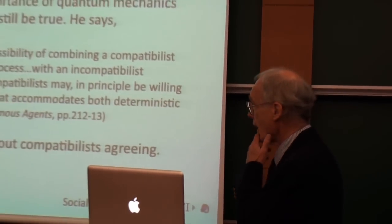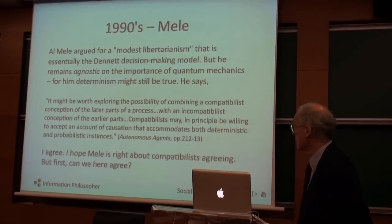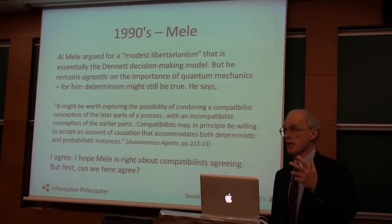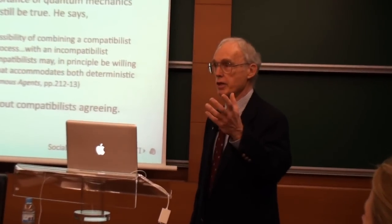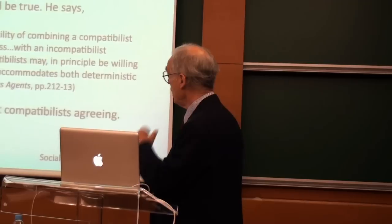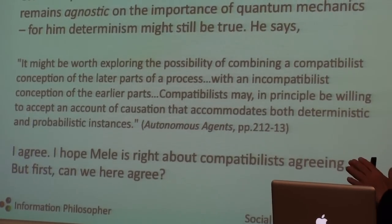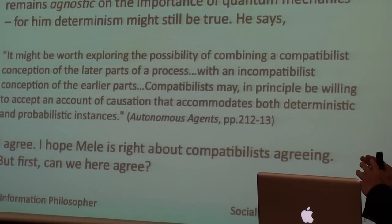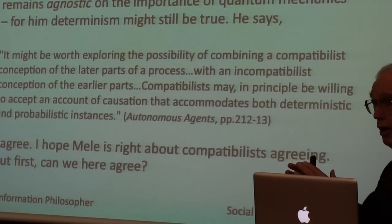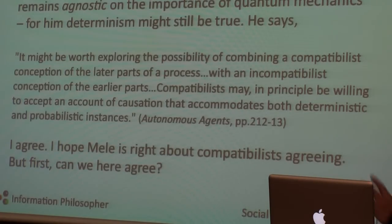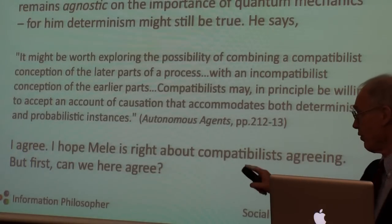Then in the 1990s, Al Mealy published a book for modest libertarianism that is essentially the Dennett decision-making model. But Al remains agnostic on the importance of quantum mechanics — his agnosticism extends to work of interest to both determinists and indeterminists. He said determinism might still be true, but it might be worth exploring the possibility of combining a compatibilist — he means determinist — conception of the later parts of the process with an incompatibilist or indeterminist conception of the earlier parts, which is the two-stage model. Compatibilists may, in principle, be willing to accept an account of causation that accommodates both deterministic and probabilistic components. That's the two-stage model, and I agree completely with Al.